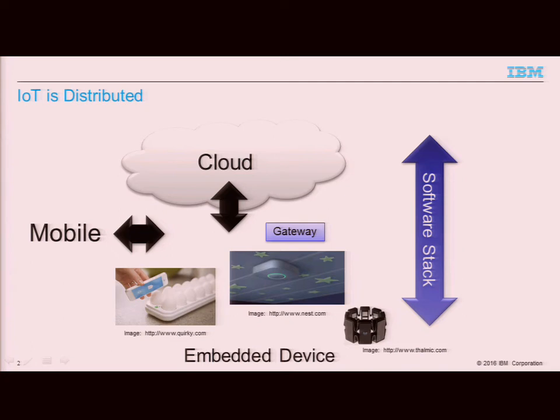In particular, it's no longer acceptable to just deploy a fixed function device and let it run for 10 years with exactly the same functionality. People these days expect continuous updates. You have to improve. Even automobiles get software updates these days. That's the problem domain in which we are working. And that is, to a certain extent, what motivates the use of technology like OSGi in such a domain.